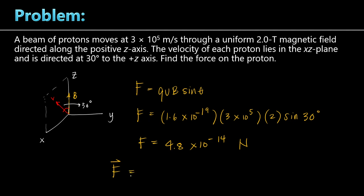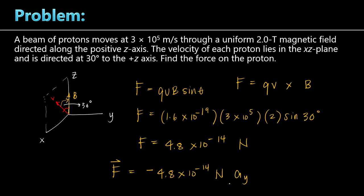If you want to know the direction of the force, we treat it as a vector. To determine the direction, curl your four fingers of the right hand from the velocity vector toward the magnetic field vector — because this force is written as a cross product: F equals QV cross B. Curl from the first vector V toward the second vector B. Where your thumb points is the direction of the force. In this case, the force direction is to the left, along the negative Y axis.